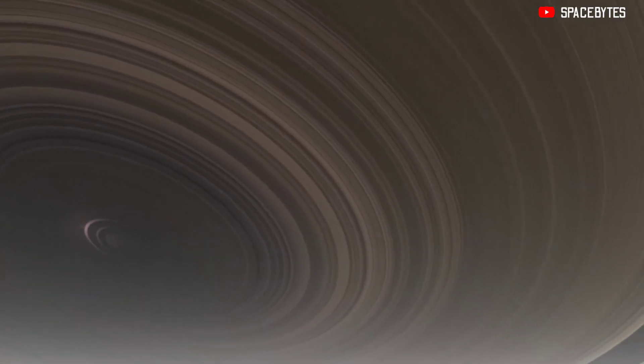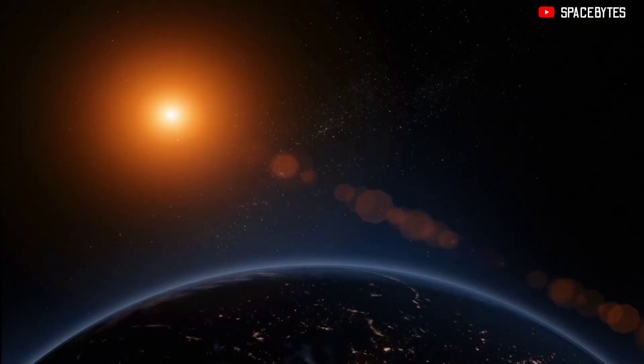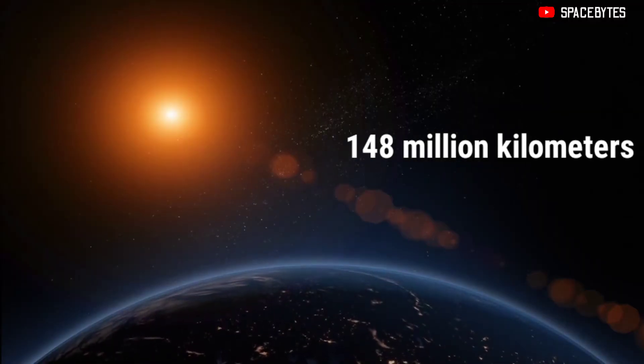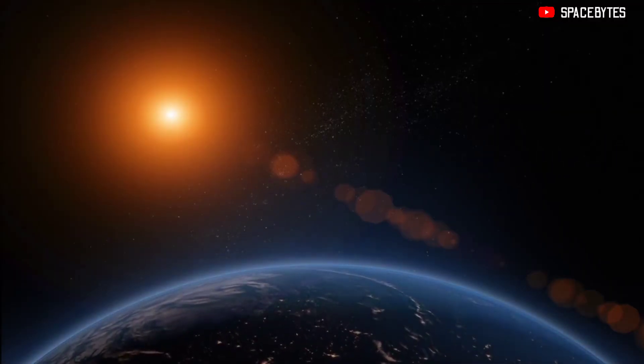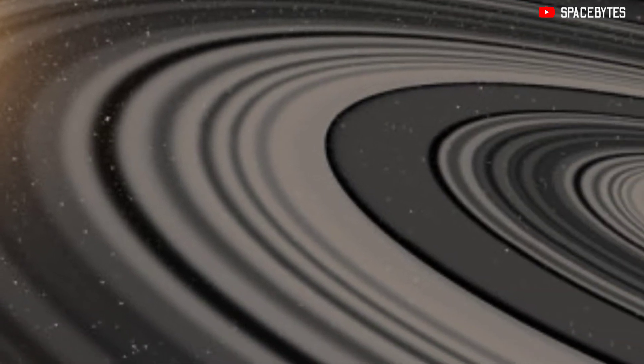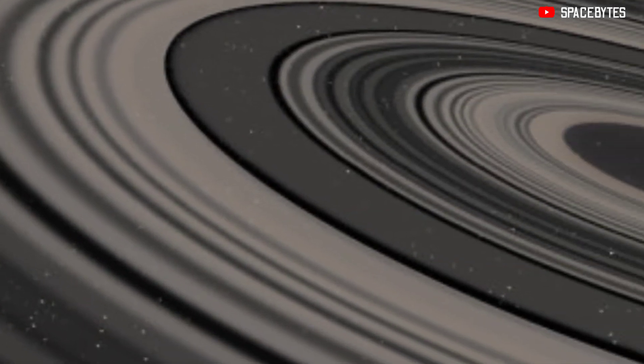You can imagine the vastness as the distance of Sun from Earth is only 148 million kilometers, which makes its rings almost the distance between Earth and the Sun.